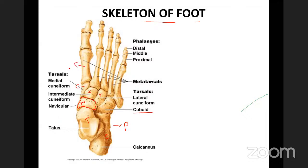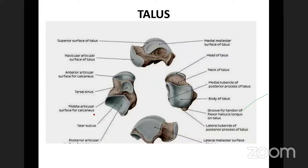The talus has a head, neck, and body. The trochlear-shaped superior surface of the body articulates with the tibia to form the ankle joint. When viewed from the medial aspect, the talus has a comma-shaped articular surface that articulates with the medial malleolus. The head articulates with the navicular bone to form the talonavicular or talocalcaneonavicular joint.